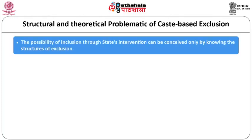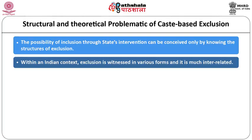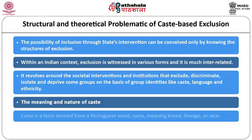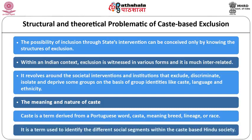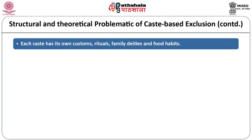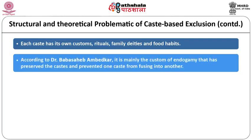The possibility of inclusion through state intervention can be conceived only by knowing the structures of exclusion. Within an Indian context, exclusion is witnessed in various forms revolving around societal institutions that exclude, discriminate, isolate and deprive some groups on the basis of group identities like caste, language and ethnicity. Caste is a term derived from the Portuguese word 'casta' meaning breed, lineage or race. It is used to identify different social segments within the caste-based Hindu society. Each caste has its own customs, rituals, family deities and food habits.